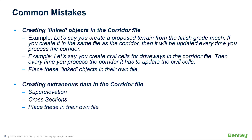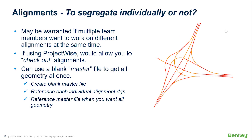You can't create extraneous data like superelevation or cross sections in the corridor file, but it's much better to put these into their own file. By doing so, you eliminate unnecessary additional processing times and allow more people to work on the project at one time. Regarding alignments — segregating them individually may be warranted if multiple team members want to work on different alignments simultaneously. Using ProjectWise would allow you to check out individual alignments. A good process is to create a blank master file that references each individual alignment, then reference that master file when you need all geometry at once.